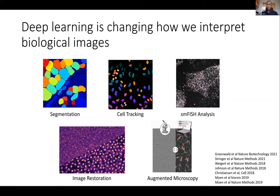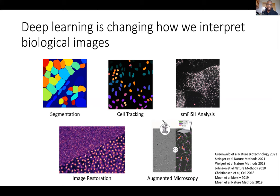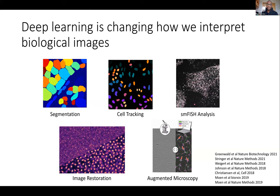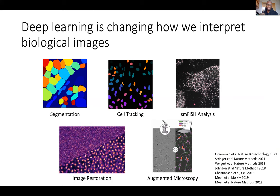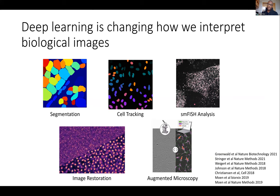The deep learning methods I alluded to — namely convolutional neural networks — are really changing how we interpret biological imaging data. The reason why they're changing this is that there are key operations that folks want to be able to do with imaging data that these new methods are now able to do with an accuracy we just didn't have before. These include cell segmentation, identifying cells in images — which is also going to be a focus of today's talk — as well as tracking biological objects, analyzing single molecule FISH images, restoring noisy images, and augmented microscopy, which is really interpreting label-free images.